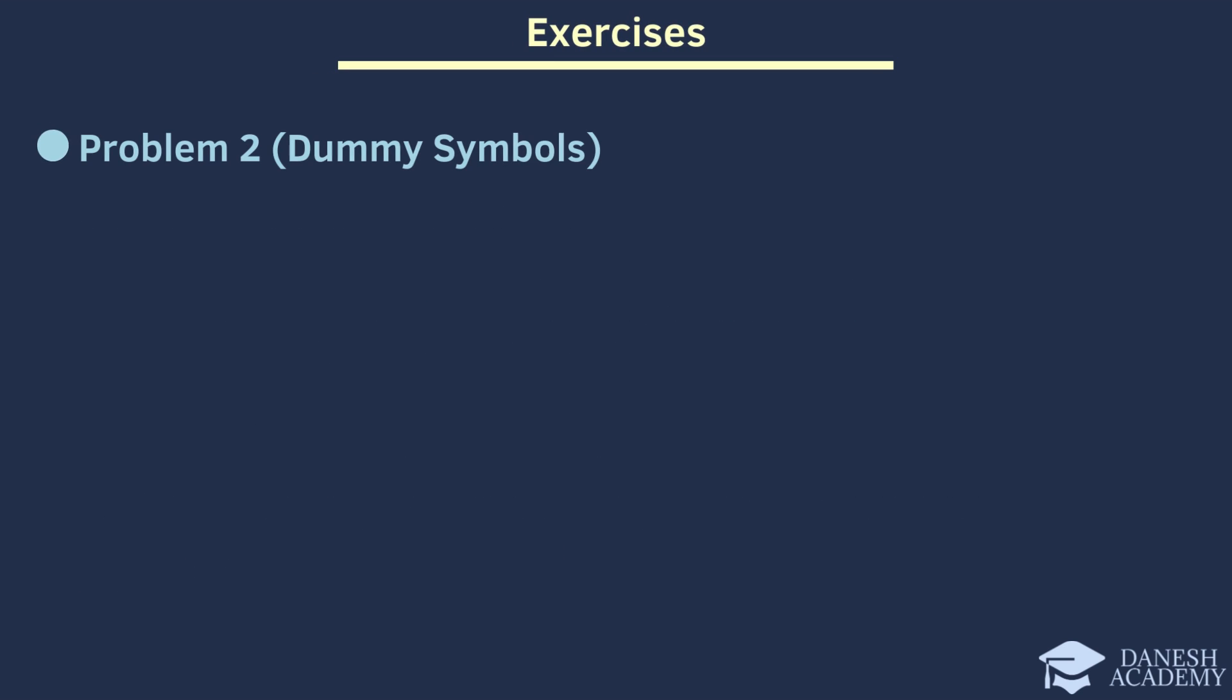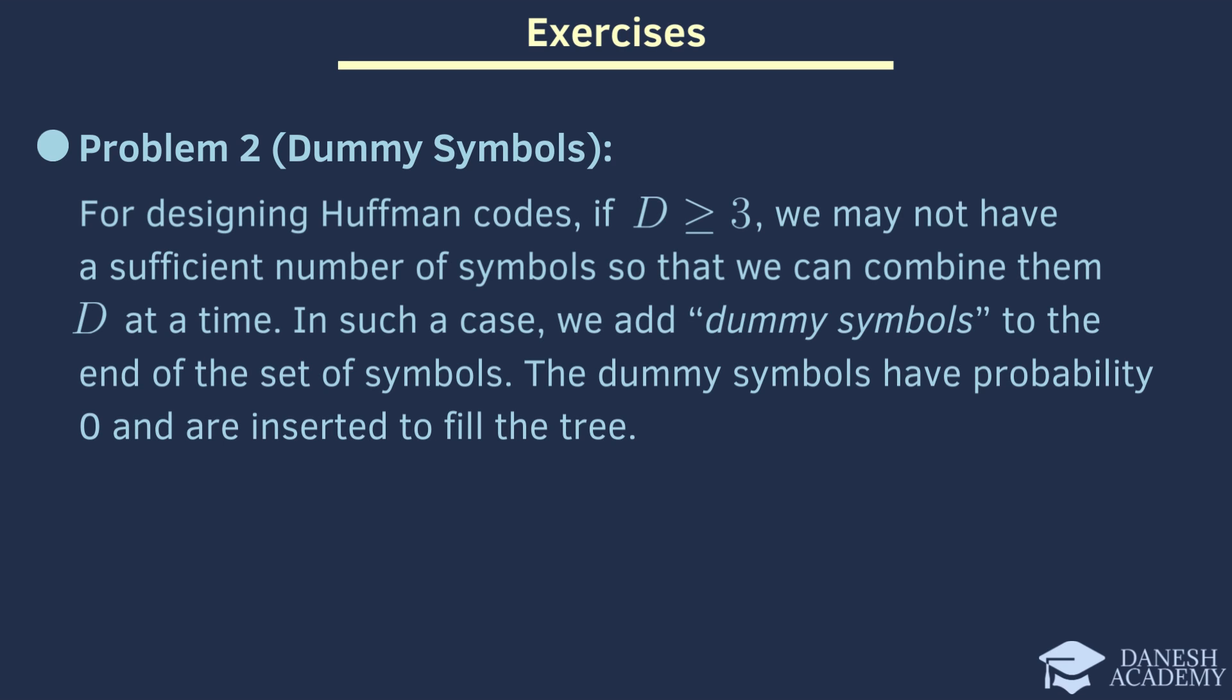The second problem is much more challenging and interesting than the first one. Let me discuss dummy symbols first. In Huffman coding, sometimes we want to group symbols together to create our code tree. But if we are using groups of three symbols or more and we don't have enough symbols to make complete groups, we face a problem. To solve this, we introduce what we call dummy symbols. These symbols have a probability of zero, meaning they don't actually represent any data. Instead, they're just there to fill in the gaps and help us to complete our tree. So, in simple terms, dummy symbols are like placeholders that ensure our tree is fully formed even if we don't have enough real symbols to fill it up.